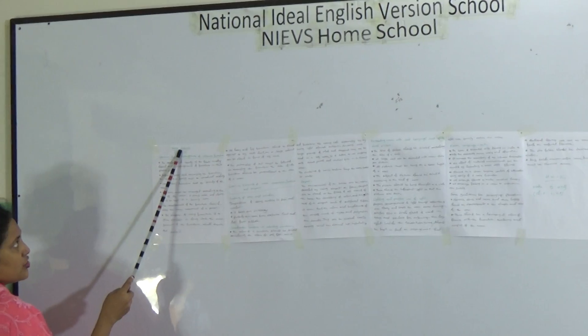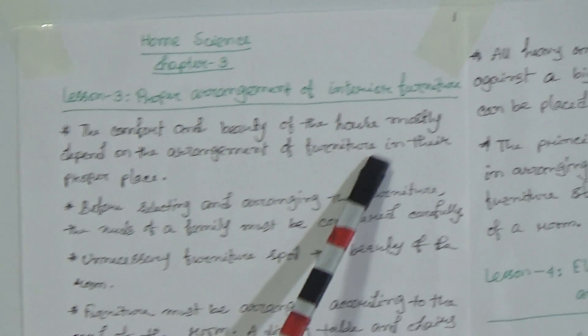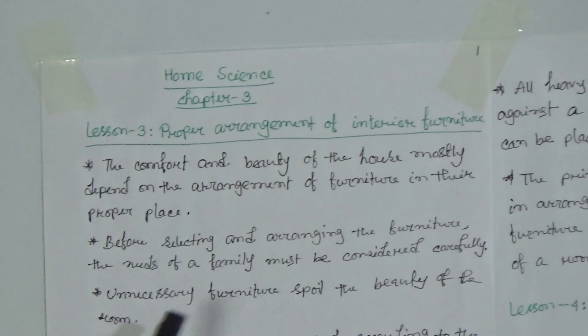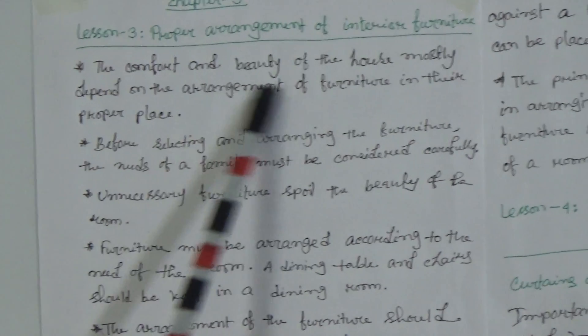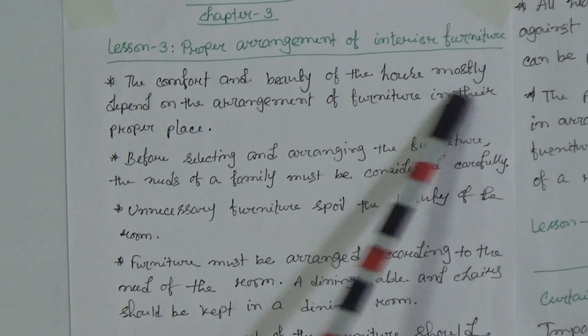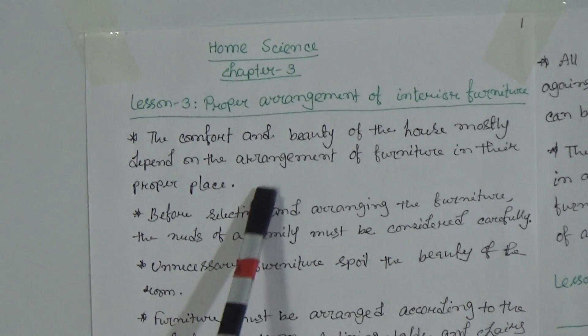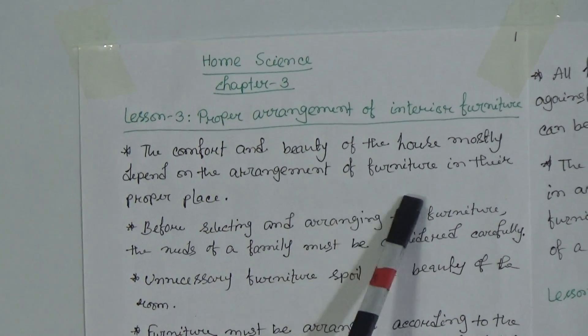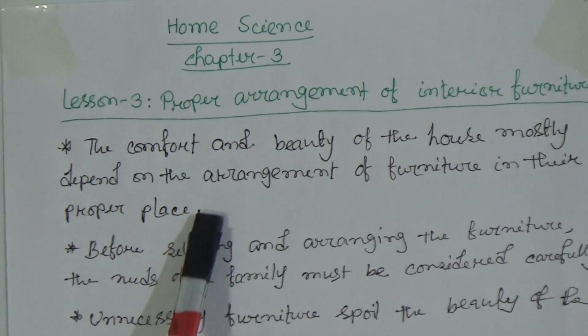This is Chapter 3, Lesson 3: Proper Arrangement of Interior Furniture. The comfort and beauty of the house mostly depend on the arrangement of furniture in their proper place.